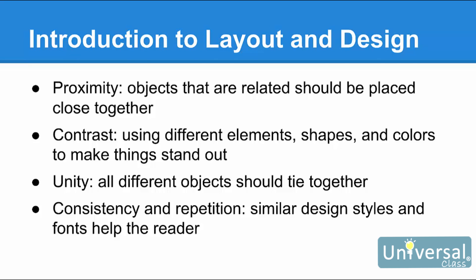Contrast: if you put all square shapes in your design, not one part of your design would stand out. Use big and small elements, different shapes, and even different colours of text to achieve contrast — it makes for a more attractive design. Unity: all the different objects and pieces in your design should tie together and become a whole. Consistency and repetition: repeating use of design styles, font types, and design elements helps someone more easily navigate your design and find what they need. This is especially important if you are designing monthly newsletters or brochures. These are all things you must keep in mind whenever you design a layout in Publisher or any other desktop publishing software.